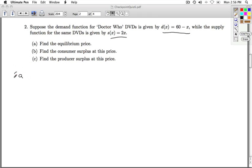So part A, we're asked to find the equilibrium price. Equilibrium is where the demand equals the supply. So 60 minus x equals 2x. That gives us that 3x is equal to 60, or x equals 20.